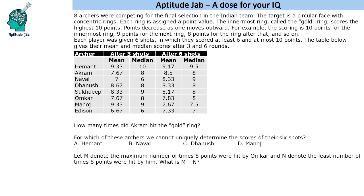This set says that 8 archers were competing for the final selection in the Indian team. The target is a circular face with concentric rings. Each ring is assigned a point value. The innermost ring is called the gold ring and it scores 10 points. Points decrease as one moves outward. For example,